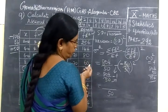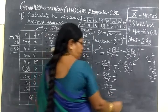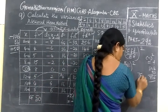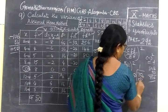10 minus 5 is 5, then 754. So 754 by 50. Now you divide 754 by 50.